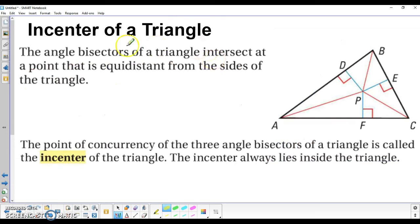The incenter of a triangle, very simply, is where the angle bisectors will intersect at a point. And this part right here, we're going to go back to our drawing and take a look at. But it's actually going to be equidistant from the sides of the triangle. So when you bisect an angle, it's going to be equidistant from the sides.